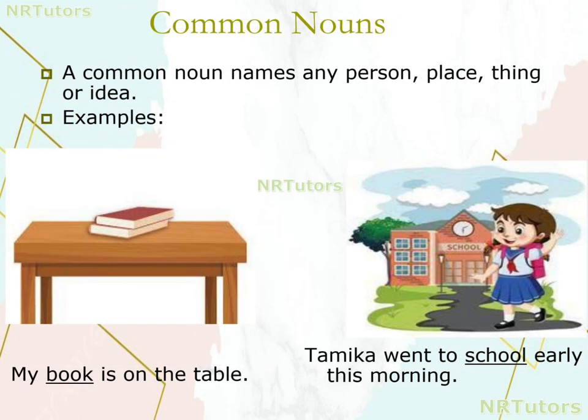The first one is common noun. A common noun names any person, place, thing, or idea. Examples: 'My book is on the table' — it is a common noun. 'Tamika went to school early this morning' — it is a common noun.